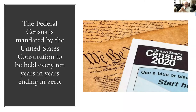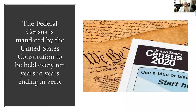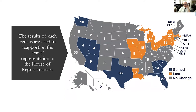The federal census is mandated by the United States Constitution. We have a census every 10 years, for years ending in zero. It began with the census in 1790, and every 10 years since the Constitution came into effect, we've had a census that attempted to count all the people in the United States. That has really never fully happened, but it was a very good goal.